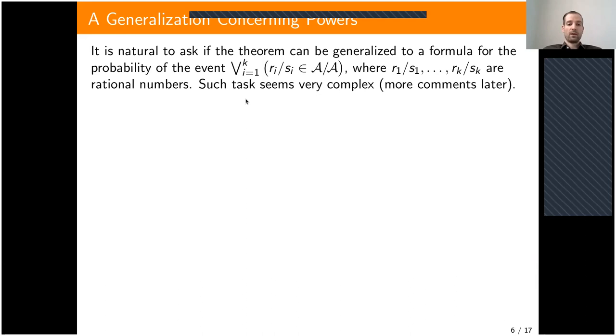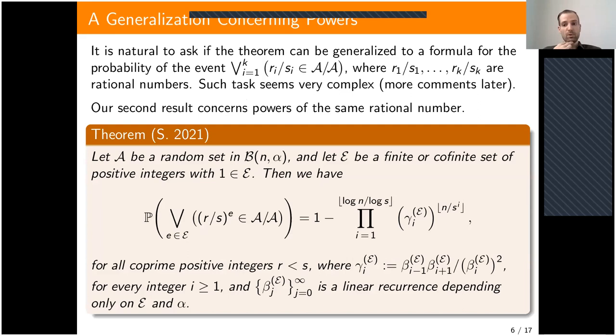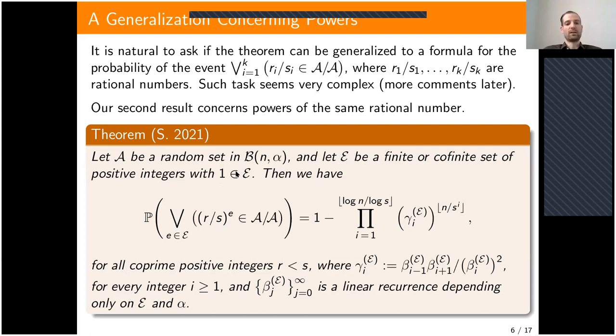This is much more complex, but I was able to obtain a partial generalization which gives the joint probability that powers of a certain fixed rational number belong to the random ratio set. Here the exponents of the powers belong to a set E which is either a finite or a co-finite set of positive integers containing the number one. A linear recurrence β_j appears, depending both on the set E and on α.